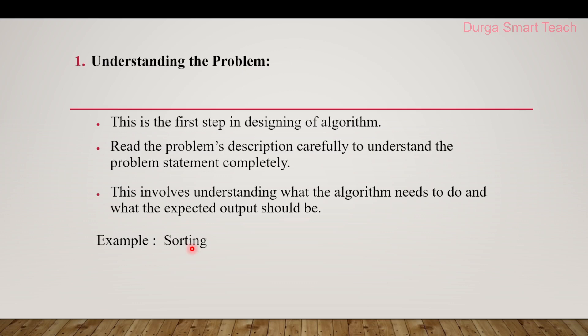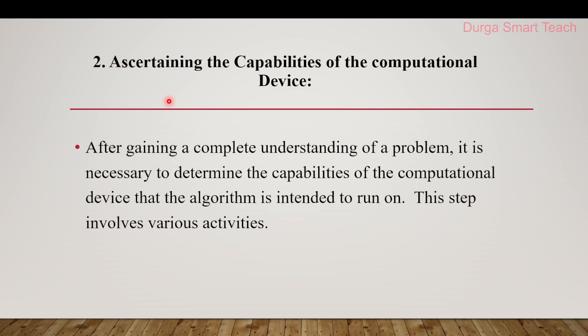Sorting means arranging elements in ascending order or descending order. For example, ascending order is nothing but smallest to largest. By this concept, we come to know that an algorithm can be created that takes unsorted data as input and returns sorted data as output. So the input is unsorted data and the output is sorted data. This completes the first step of understanding the problem.